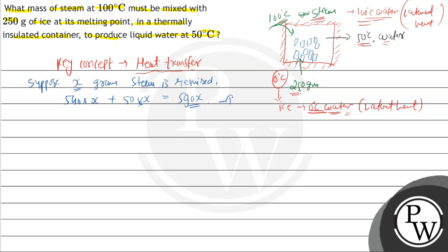This will be equation number one. Now in the second process, here we have 250 grams of ice. So 250 grams of ice, and its latent heat is 80, plus 250 grams final temperature is 50.